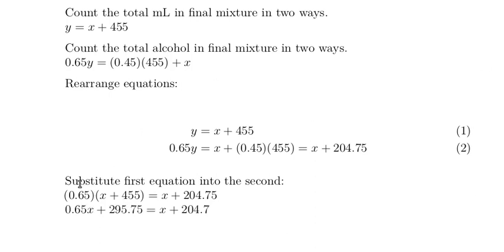Distribute 0.65 through the parenthesis. On this next line we're doing two things at once: subtracting 204.75 from both sides and subtracting 0.65x from both sides, leaving 0.35x equals 91.